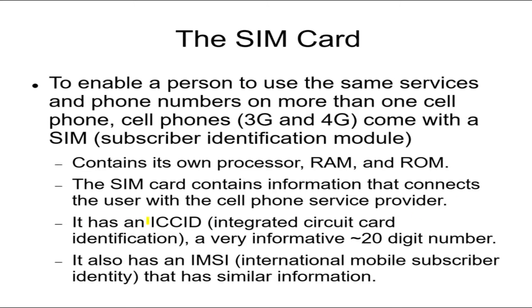The SIM card has an ICC ID — Integrated Circuit Card Identification — a very informative 20-digit number. There's also a number called IMSI, which has similar information. The ICC ID is actually printed on the card, so once we recover it, we will have that information. Even if a card was left at a crime scene, we can use this number to identify who sold it, what kind of service was there, and who it was sold to.